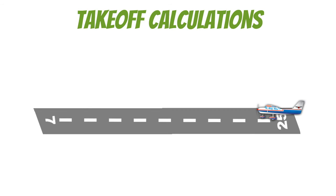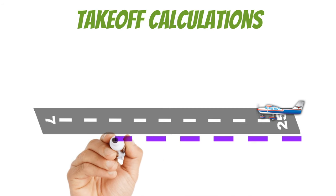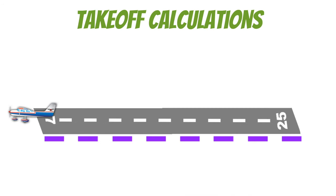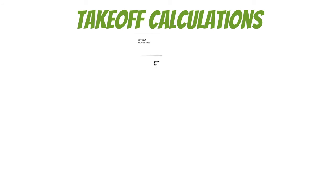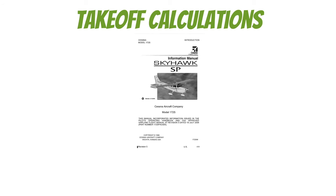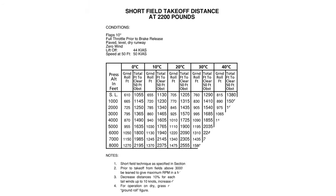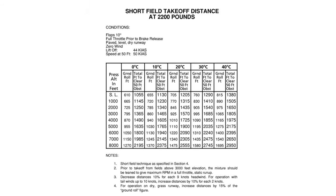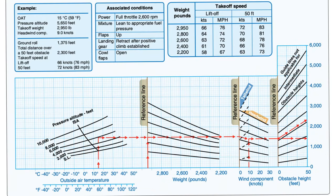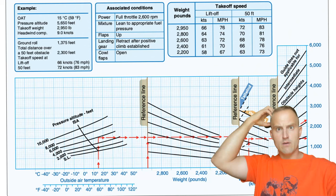Now let's start making some actual calculations so you know with absolute certainty that you're going to be safe when you go fly. The first calculations you need to know are takeoff calculations — do I have enough runway to make the takeoff or am I going to go off the end? To figure that out, we look at the pilot's operating handbook or POH. In newer POHs, the performance section will be in section 5. For the written test, they're going to give you this spaghetti chart — I promise it's not nearly as bad as it looks. It's actually really simple.